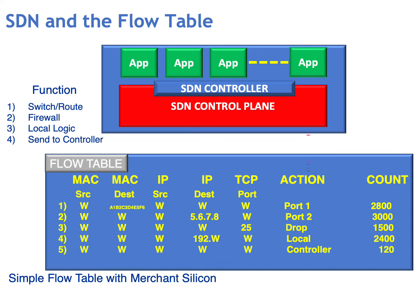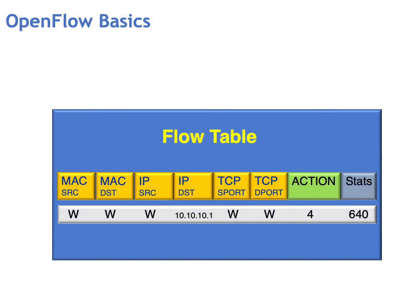Last but not least, perhaps the most complex use of the software-defined network: if you can't make any match at all, forward the packet up to the controller so that the application can interrogate it and make a decision on the best method to forward that particular packet across the network.